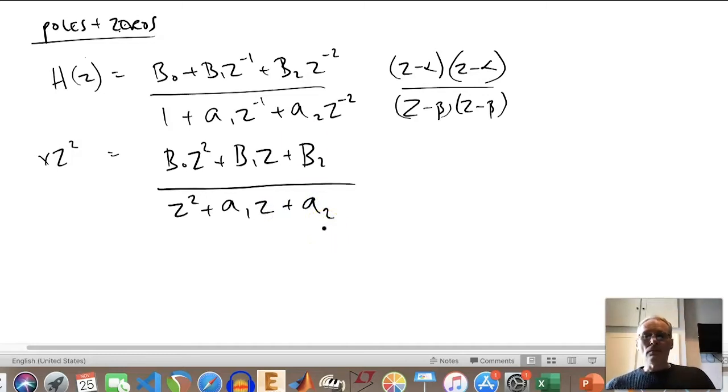I have to do the same on the bottom, so we get z² + a₁z + a₂. We still have our constant term B₂ or a₂, but now we are essentially giving ourselves a fighting chance to convert into this form here. So if you find the roots of this numerator and the roots of this denominator, then you end up in this form. What we're looking for is to find values of z where the denominator equals zero and where the numerator would evaluate to zero.